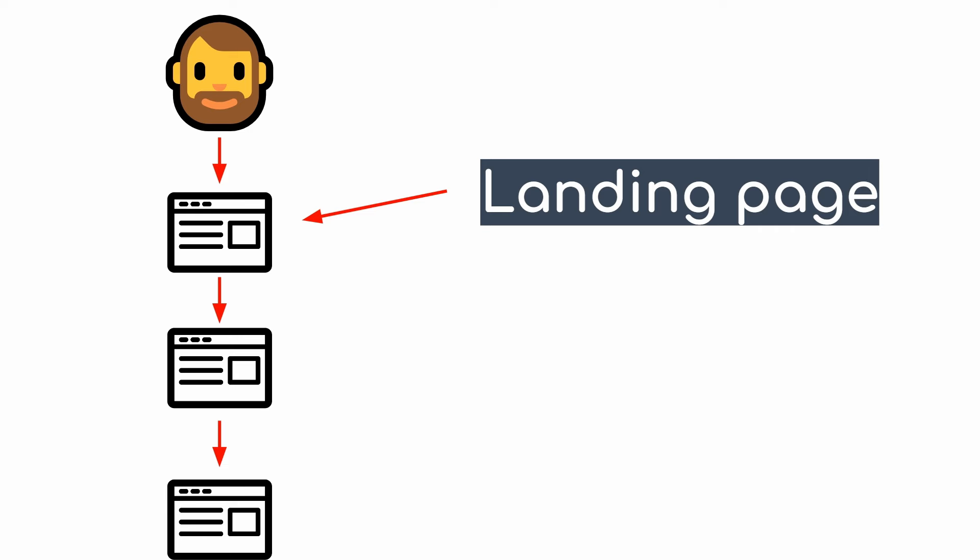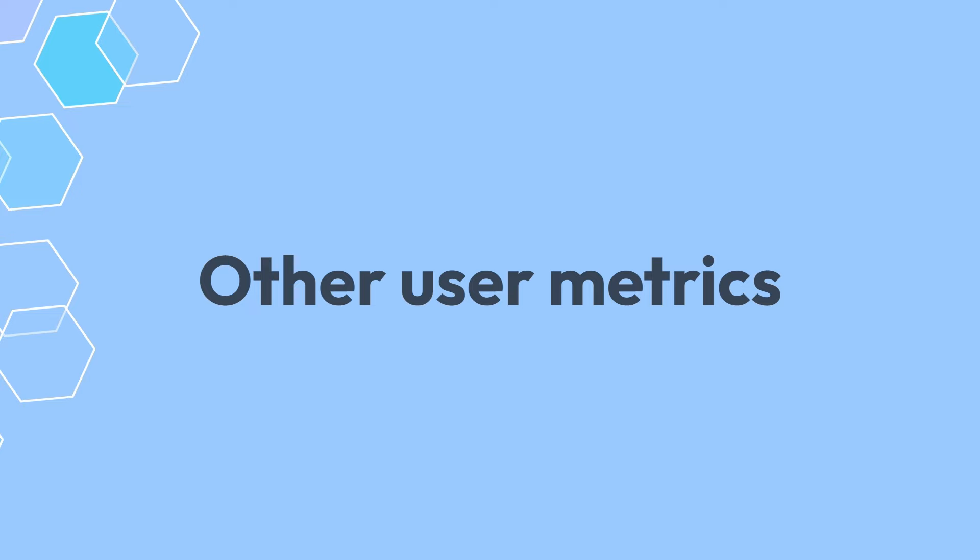If you visit the home page, then the product page, then go to the cart, in the landing page report you'll be counted as one home visit. However, if you go to the pages and screens report, you'll be counted as three different pages — one for homepage, one for product page, and one for cart. So landing page is your first page of your session.